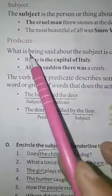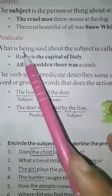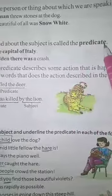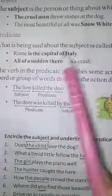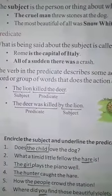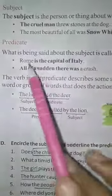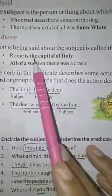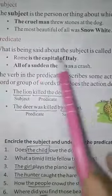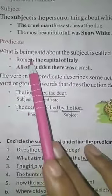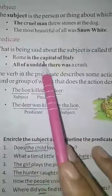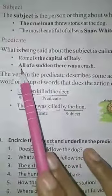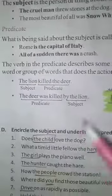Next, predicate. What is a predicate? What is being said about the subject is called the predicate. It means what we say about a subject in the sentence is called predicate. For example, 'Rome is the capital of Italy' — we are talking about Rome. As usual, you can see this in the next example as well.